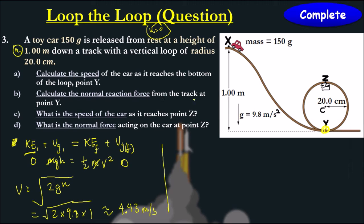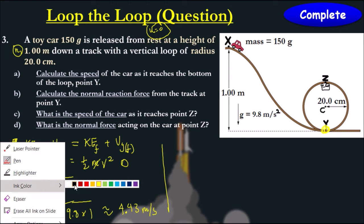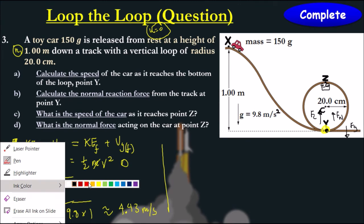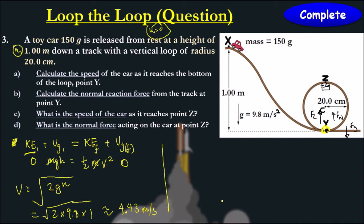Calculate the normal reaction force from the track at point y. Now this is where you need to try and interpret drawing the vector diagrams. At point y here, the centripetal force is going up. Gravitational force is coming down. And our normal force is going up like so. Firstly, let's work out what our centripetal force is. So centripetal force equals to normal force plus gravitational force. We're going to say that up is our positive direction. So normal force equals to centripetal subtracted by gravitational force.